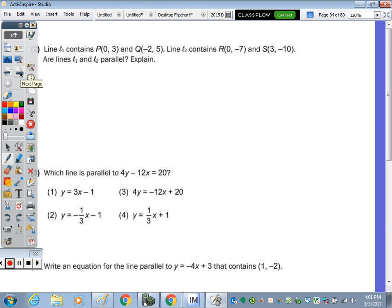Number 2. It says line L1 contains the points (0, 3) and (negative 2, 5). And line 2 contains the points R (0, negative 7) and S (3, negative 10). Are the lines parallel? Well, we need to look at their slopes. So for line 1, our slope equals, that contains these two points. I like to write it and simplify later, so I'm going to underline the Ys. So subtracting the Ys, 5 minus 3. Now subtracting the Xs in the same direction would be negative 2 minus 0.